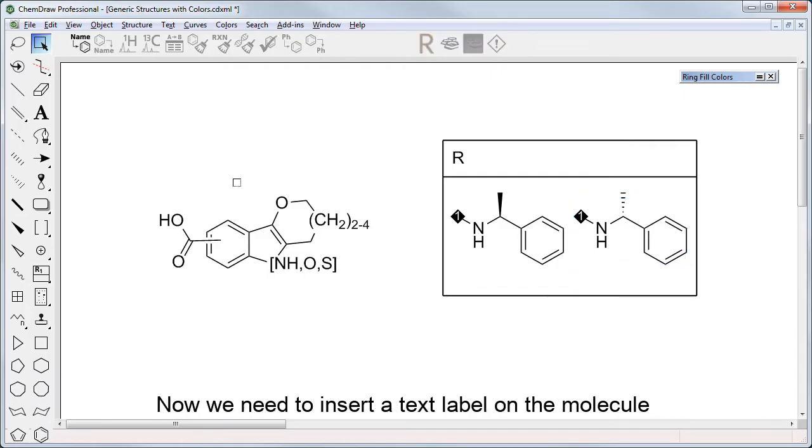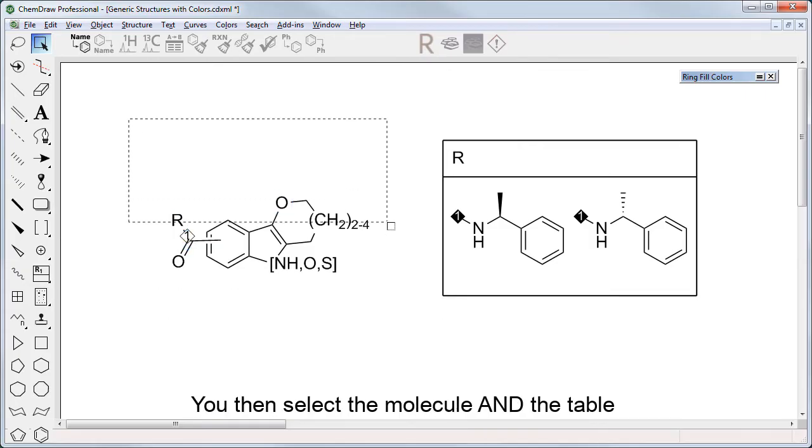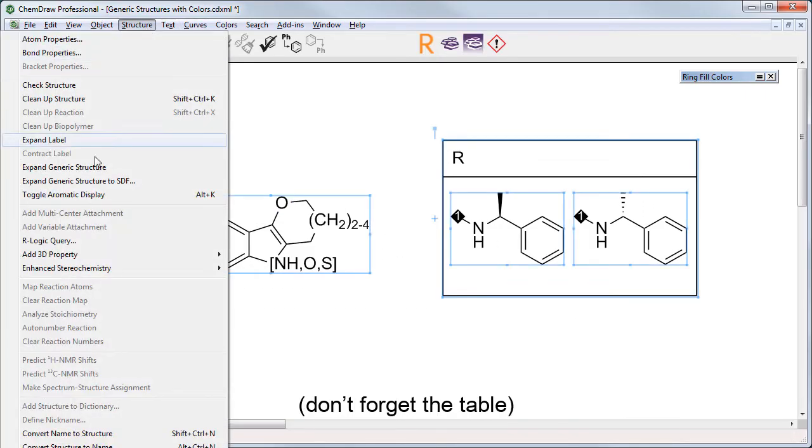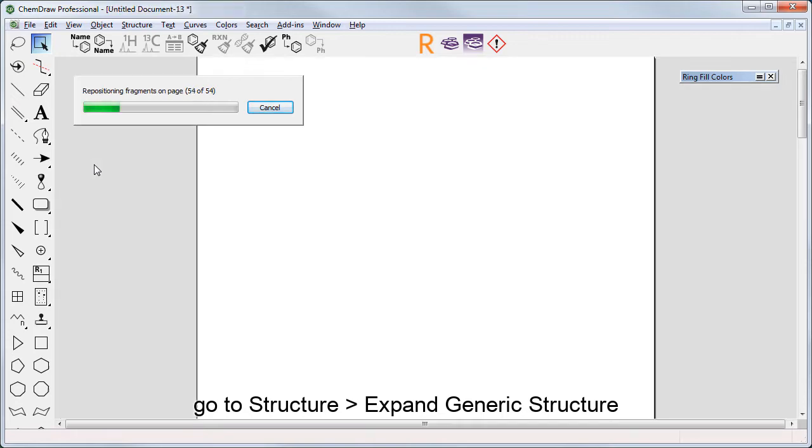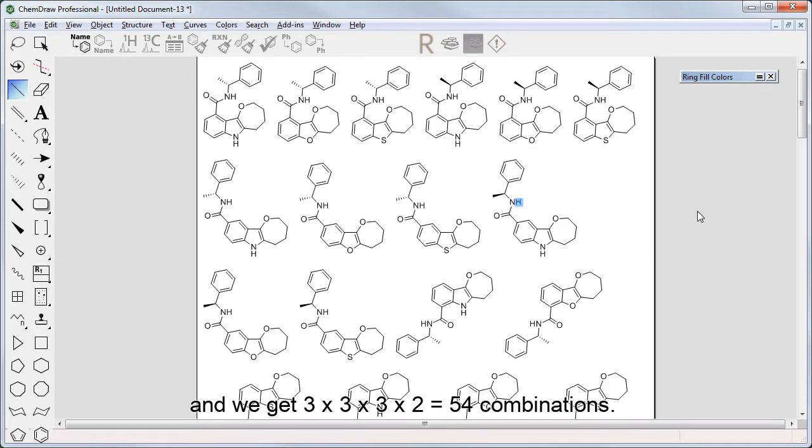Now we need to insert a text label on the molecule that matches the header of the R group table. Then select the molecule and the table, don't forget the table, go to Structure, Expand Generic Structure, and we get 54 combinations.